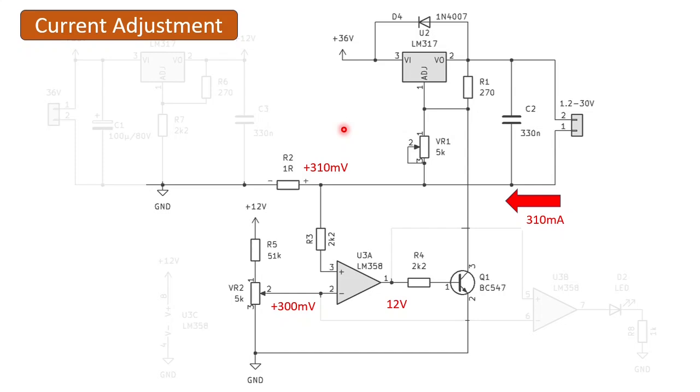The LM358 is now in charge. As soon as the shunt voltage exceeds the voltage on the wiper of the potentiometer, it starts pulling the LM317 leg down to reduce its voltage.